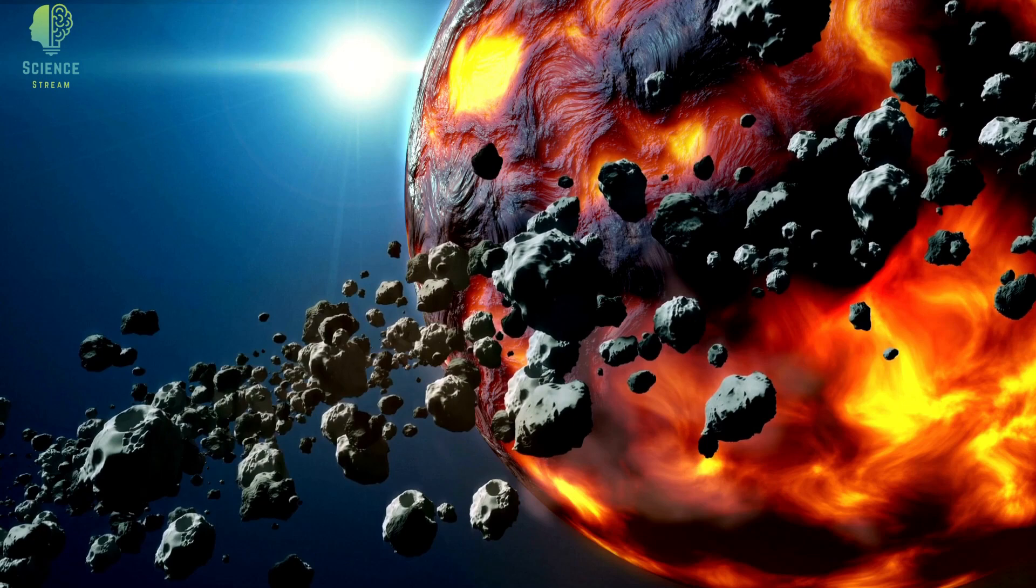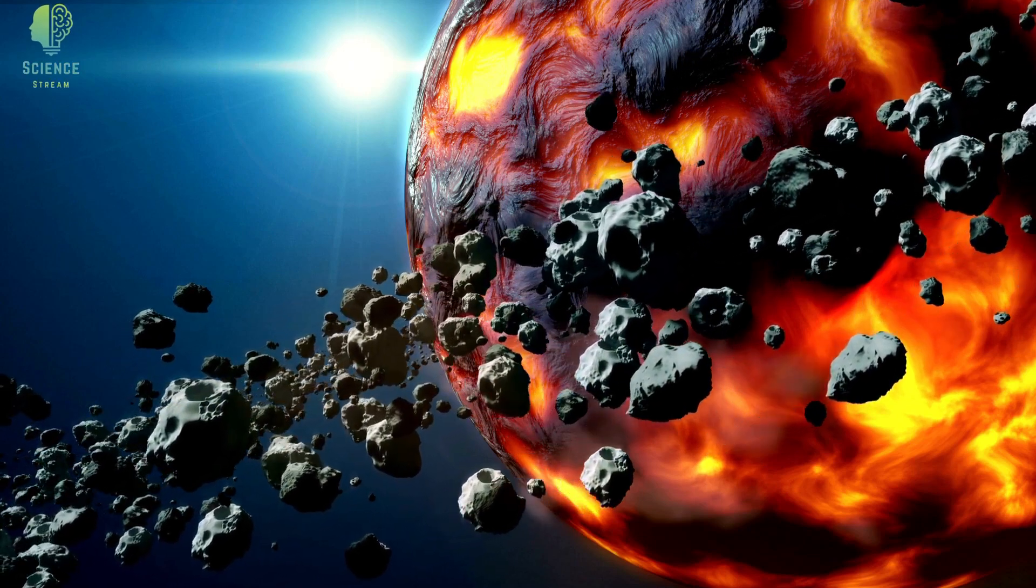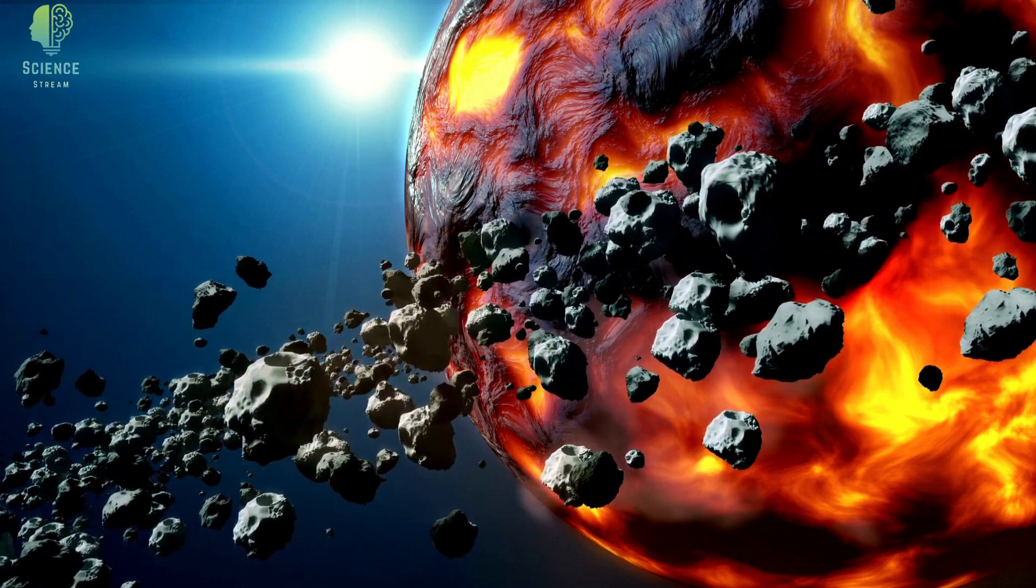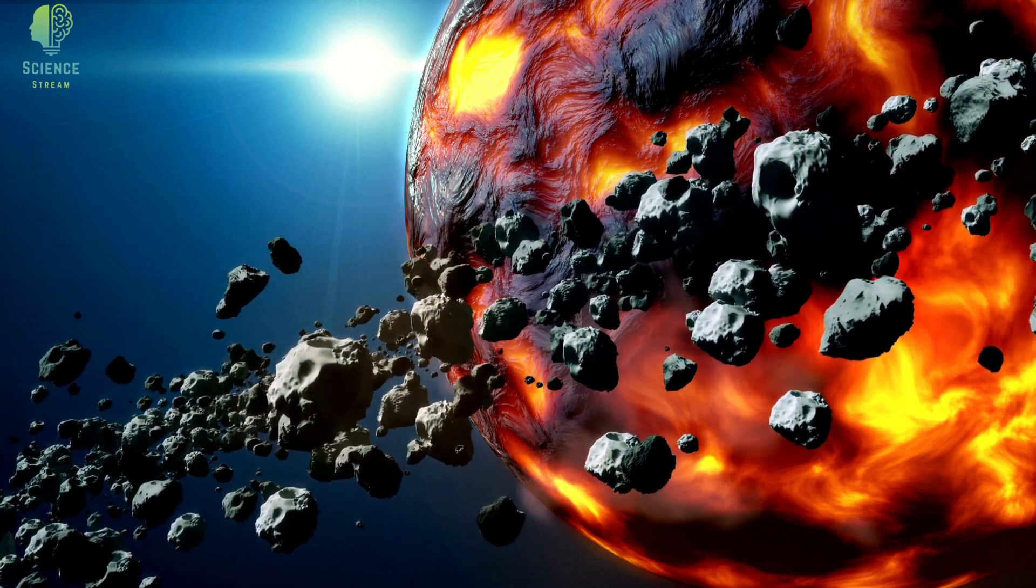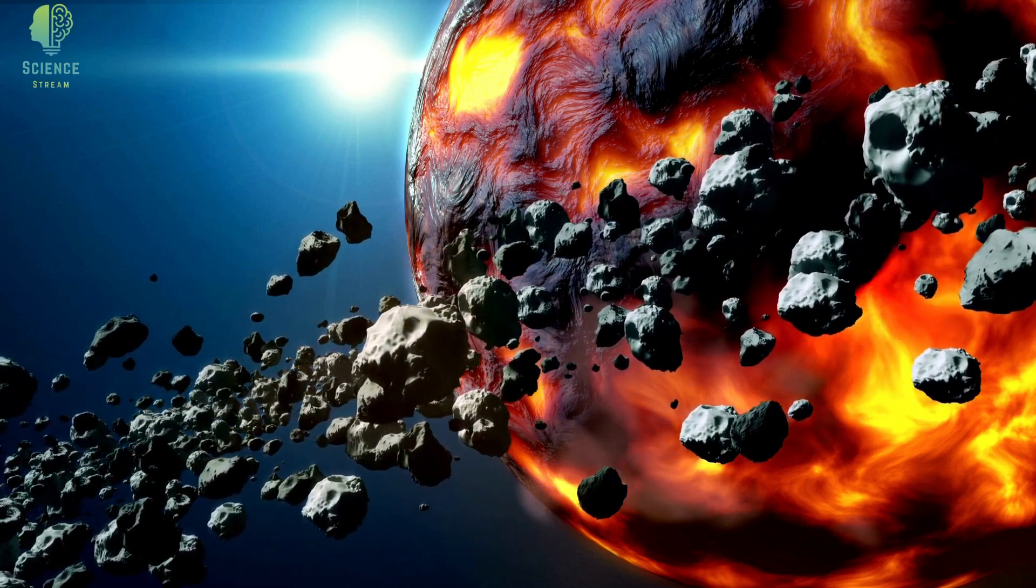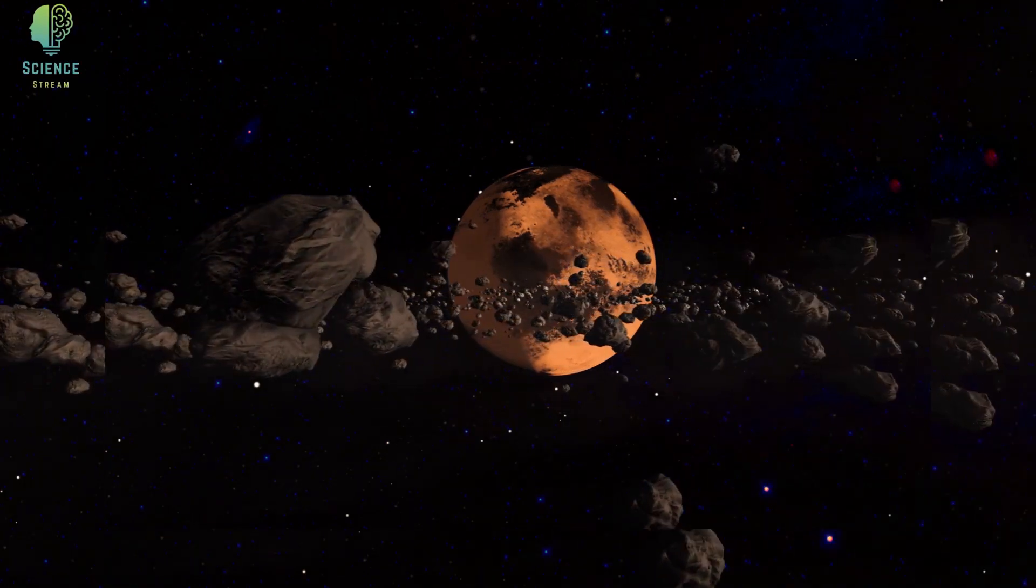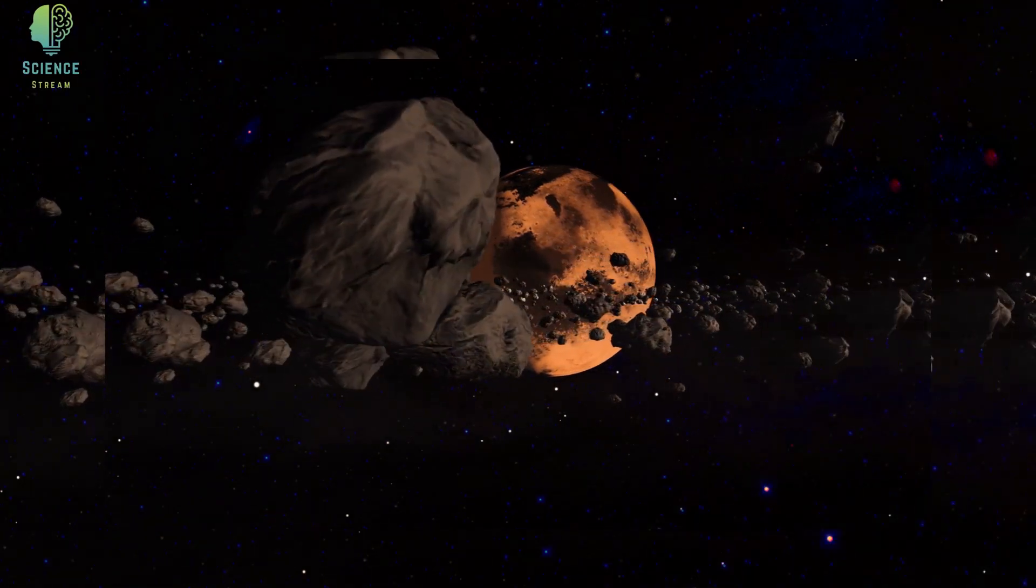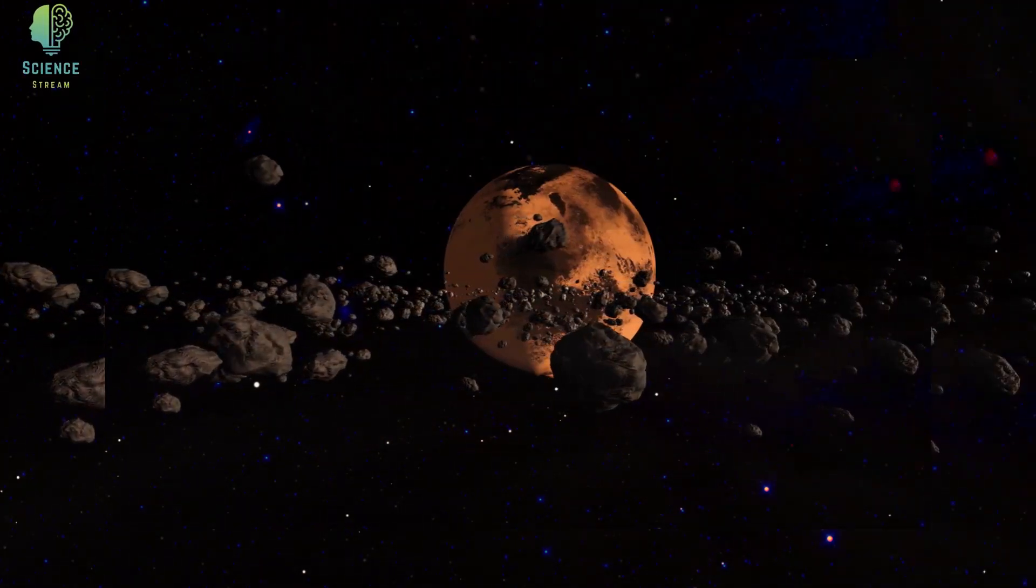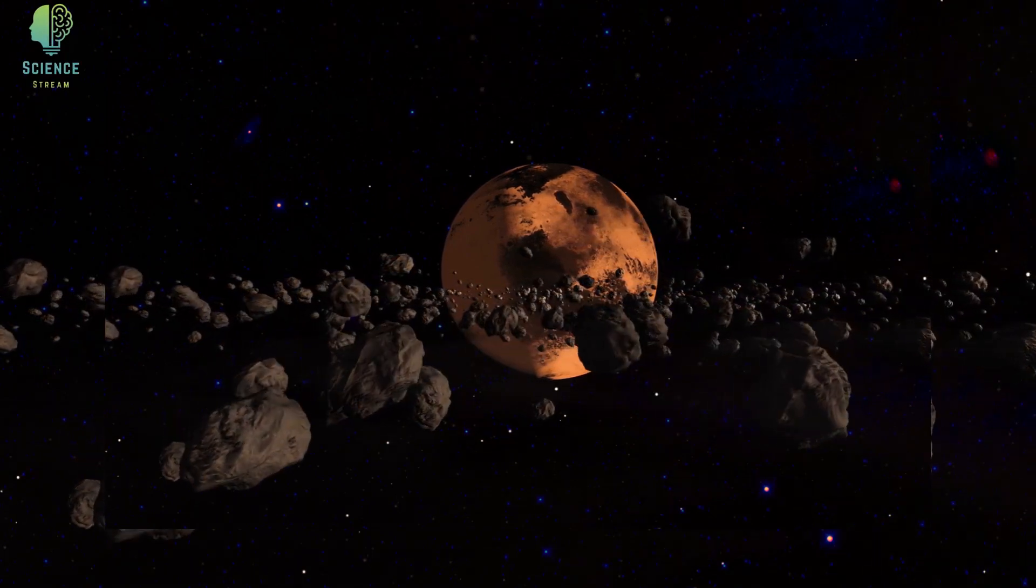Definition. The Kuiper Belt, also known as the Edgeworth-Kuiper Belt, is a region of the solar system that exists beyond the eight major planets, extending from the orbit of Neptune at 30 AU to approximately 50 AU from the Sun. It is similar to the asteroid belt, in that it contains many small bodies, all remnants from the solar system's formation. But unlike the asteroid belt, it is much larger, 20 times as wide and 20 to 200 times as massive.